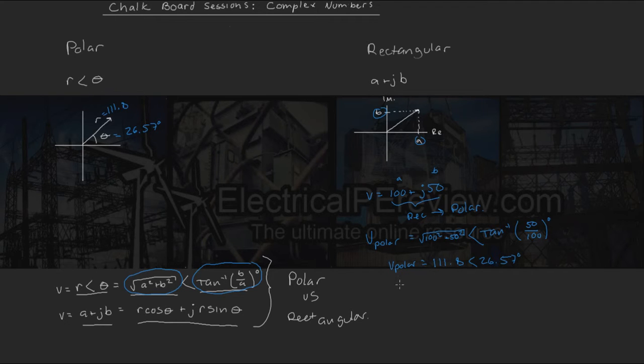Now let's prove we did our math right, and let's go back and solve for rectangular. V, rectangular. Now we've got our polar components r and theta, so we're going to solve for our a and b.